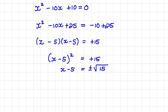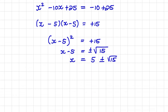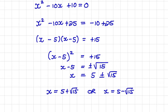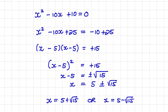What is left to do is transpose the negative 5 — move it to the right hand side — giving us plus 5 plus or minus the square root of 15. So we have two possible values for x: x equals 5 plus the square root of 15, or x equals 5 minus the square root of 15. That is how we solve for x by completing the square.